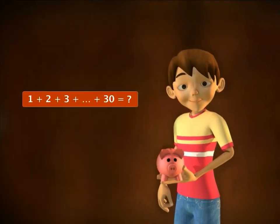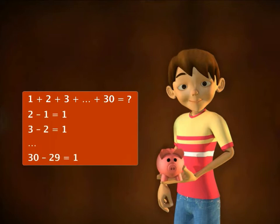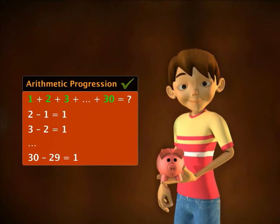To compare, we need to first find out how much money Sam will have after 30 days. Notice that the numbers 1, 2, 3, and so on till 30 are an arithmetic progression.